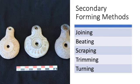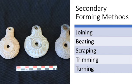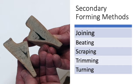This leads nicely into the topic of secondary forming methods. One of those methods is joining, which can involve joining together the pieces of mold-made vessels, but more commonly just involves adding handles and spouts and so on to vessels.